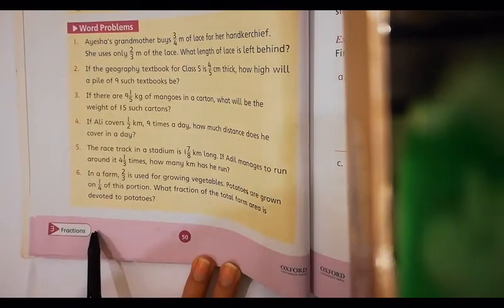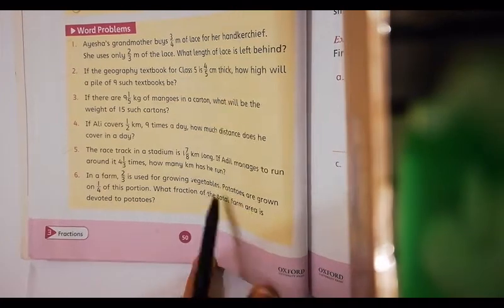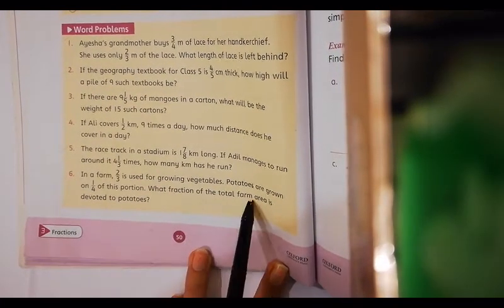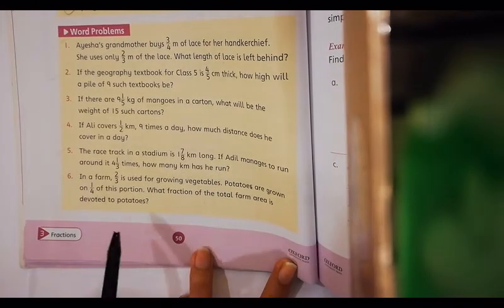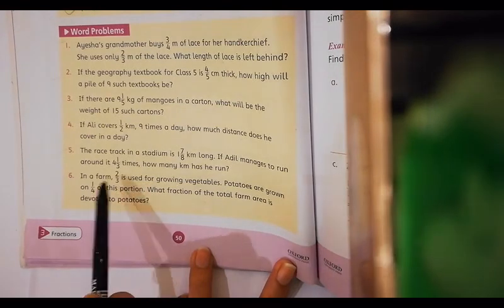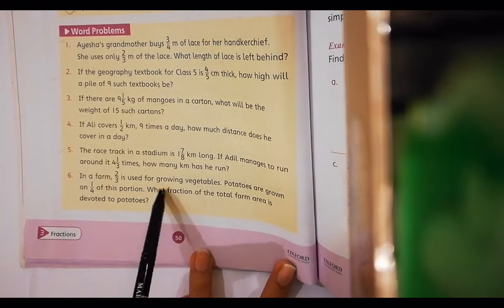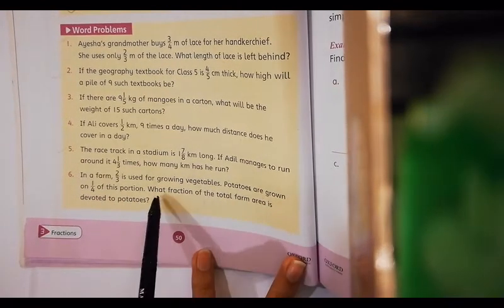Question number 6: In a farm, 2/3 is used for growing vegetables. Potatoes are grown on 1/4 of this portion. What fraction of the total farm area is devoted to potatoes? I have a portion of the land, and potatoes are grown on 1/4 of this portion. I have to find out the total fraction of the farm area devoted to potatoes.